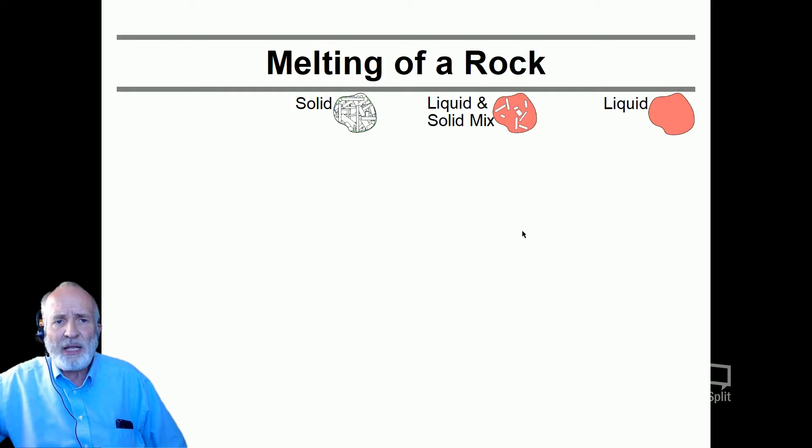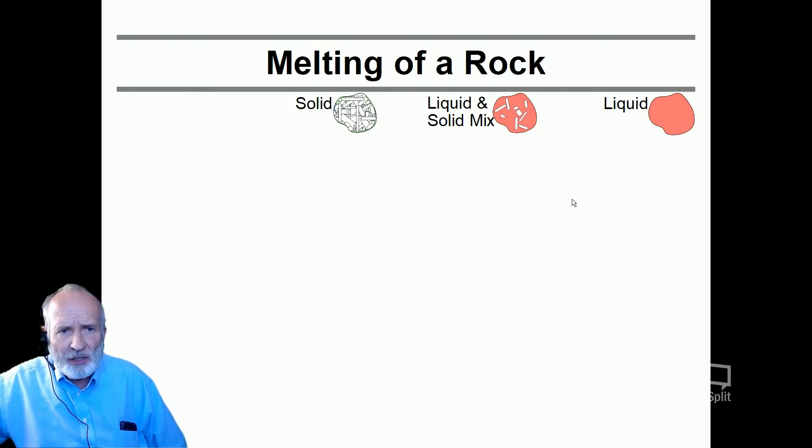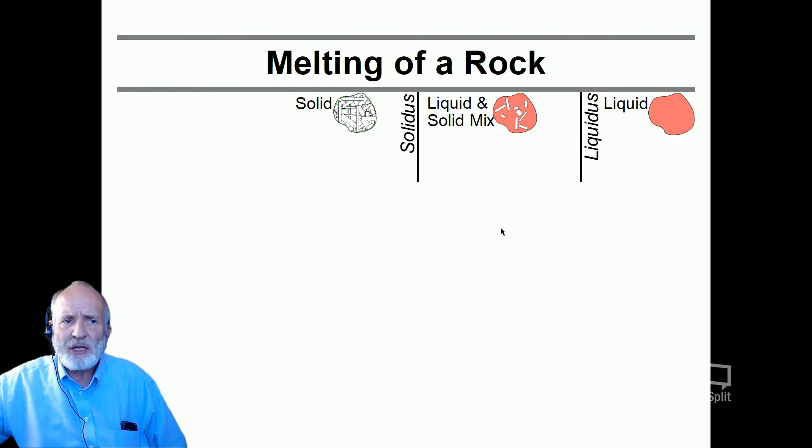The boundary when that starts is called the liquidus. It's a temperature boundary and also a pressure boundary. So at the liquidus temperature, we are starting to form our first tiny crystals. That process is complete once we cross the solidus boundary. At the solidus boundary, we have almost all crystals and hardly any melt left. And once we cross it, it's all solid.